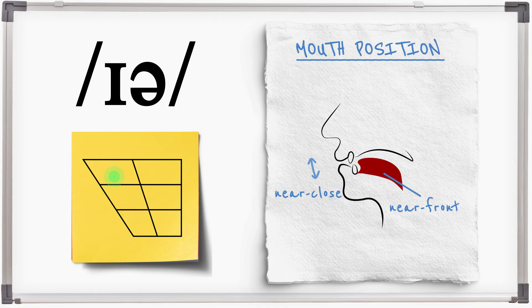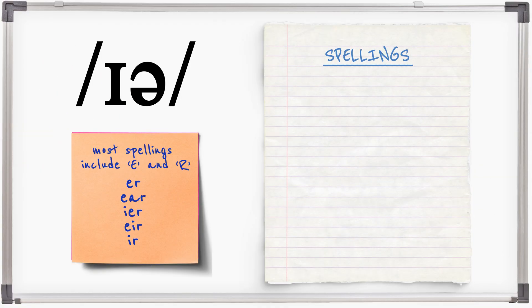Ear spellings normally include E and R. Examples: Zero, interior, serious, fear, ear, clear, beer, puppeteer, cheers, piss, peer, weird, we're, souvenir.